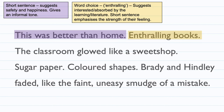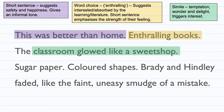'The classroom glowed like a sweet shop' is a simile. A simile is a piece of imagery where one thing is likened to another using the word 'like' or 'as.' This simile shows the temptation, wonder, and delight — it triggers interest. Just as a pupil would be very interested in a sweet shop and feel distracted and overwhelmed, so too are the children in this classroom overwhelmed with their interest.